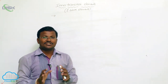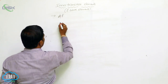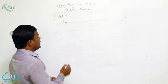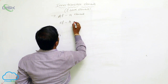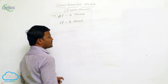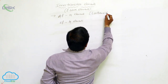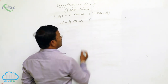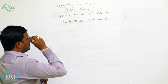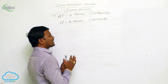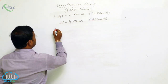These f-block elements belong to the third group and are mentioned in three series or periods. They are called as the 4f series and 5f series, each consisting of fourteen elements. The 4f series starts after lanthanum, hence they are called lanthanides, while the 5f series starts after actinium, hence they are called actinides. Lanthanides and actinides are separately studied in chemistry.